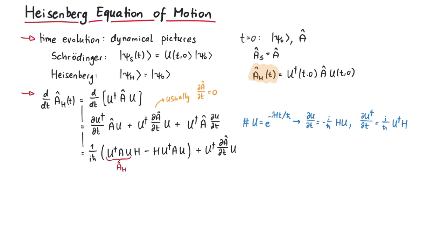Here we can recognize the definition of the Heisenberg picture operator, and we can write this in terms of the commutator expression.